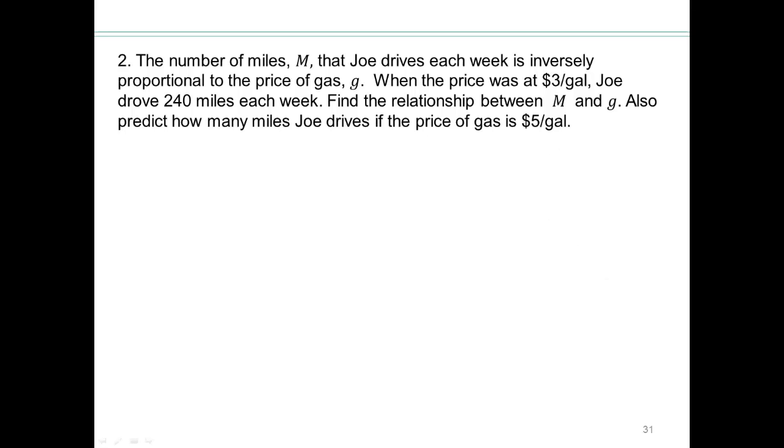That means that if m and g are related to each other, then m equals k over g, or m times g is a constant k. All right, so when price was $3 per gallon, Joe drove 240 miles each week. So let's use that information and find what this k is.